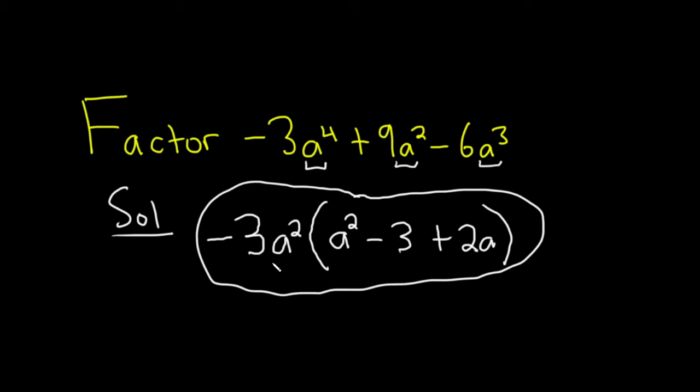Let's double check it. Negative 3a squared times a squared, you add these, so you get this. Checks. Negative 3a squared times negative 3 is going to become a positive 9a squared. Checks.